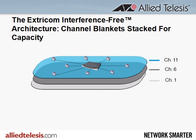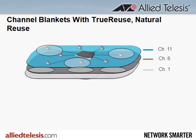Each blanket is operated by a different radio in the access point, ensuring that there is no contention between the blankets at any time. Factoring in TrueReuse and NaturalReuse with three blankets of coverage, we can support nine simultaneous wireless transmissions — and that's within the relatively restrictive 2.4GHz band.